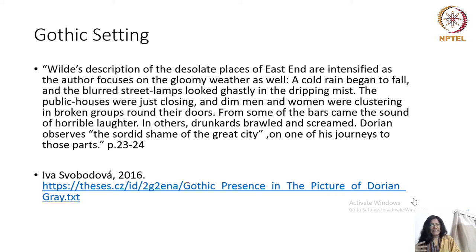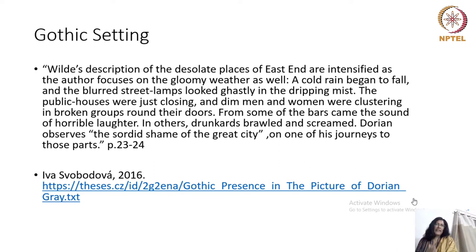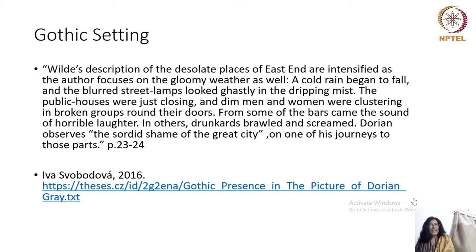Despite this bleak atmosphere, there are sounds of laughter — but it is horrible laughter, not something pleasant. There is horror about this laughter. The scene is very Gothic in tone, both in terms of color — the rainy weather offers gray, dark tones — and in the mental atmosphere created by the sounds from the street. In other moments we see drunken brawls and screams. There is horrible laughter on one side and screams of pain on the other. Dorian Gray notices these street scenes as manifestations of the shame of the great city of London.